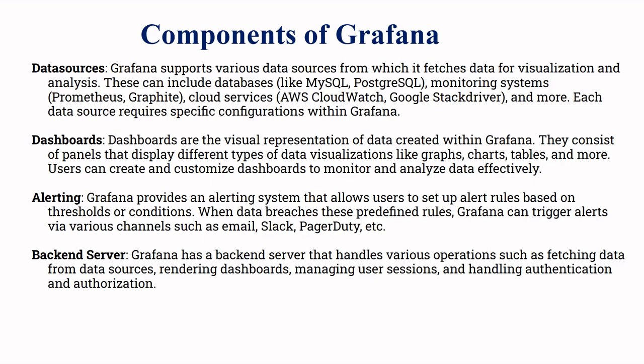Each data source requires specific configuration within Grafana. The second component is the dashboard — visual representations of data created within Grafana, consisting of panels displaying different types of visualizations like graphs, charts, and tables. Users can create and customize dashboards to monitor and analyze data effectively. The third component is alerting — Grafana provides an alerting system to set up alert rules based on threshold conditions, triggering alerts via channels such as email, Slack, and PagerDuty.